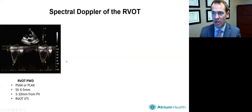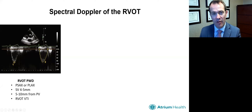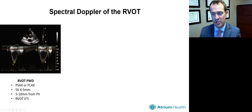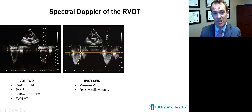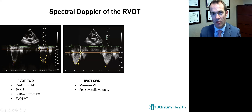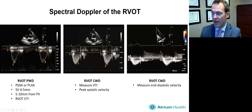In terms of spectral Doppler, we begin with the RVOT, usually obtained from a parasternal short axis view. The sample volume is usually about 4 to 5 millimeters, about 5 to 10 millimeters from the pulmonary valve, using that modal velocity — the brightest signal — to measure the RVOT VTI. We then switch to continuous wave to measure the VTI and peak velocity, translating these using the Bernoulli equation to measure mean and peak gradients across the RVOT to look for things like pulmonary valve stenosis. If there's pulmonary regurgitation, we evaluate that and can measure end diastolic flow to estimate end diastolic pulmonary pressures.